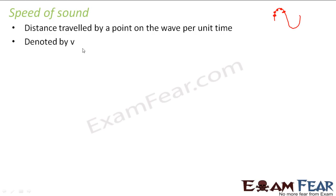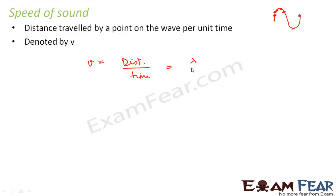So how do we calculate the speed? The speed of sound is given by the distance traveled divided by time taken. Consider any point — what is the distance being traveled by that point? The distance is equal to one wavelength.